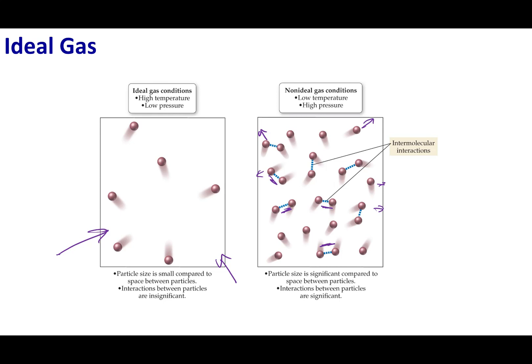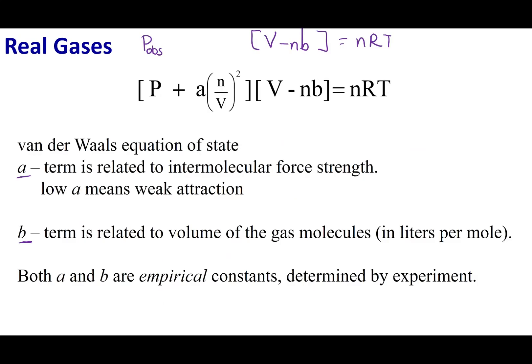that means the observed pressure that I measure is going to be less than if it was an ideal gas where they are not attracted to each other and hitting the walls more. So what I have to do is I have to correct for my observed pressure.